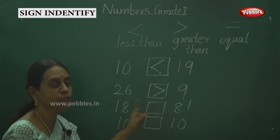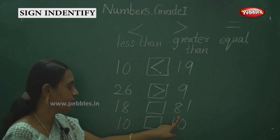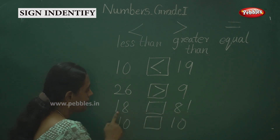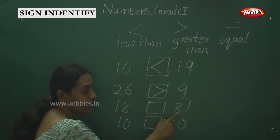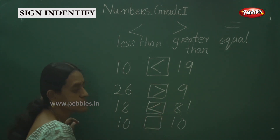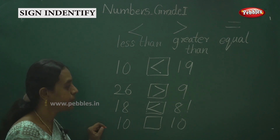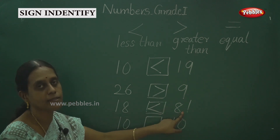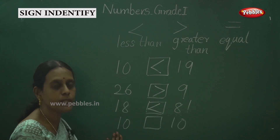Some children may confuse numbers like 18 and 81. So observe the first number and second number carefully — the ones place and tens place. Here the number is 18 and here it is 81. The bigger number is 81, so you put the sign accordingly: the smaller side points to the smaller number and the wide opening side faces the bigger number. So 18 is less than 81.